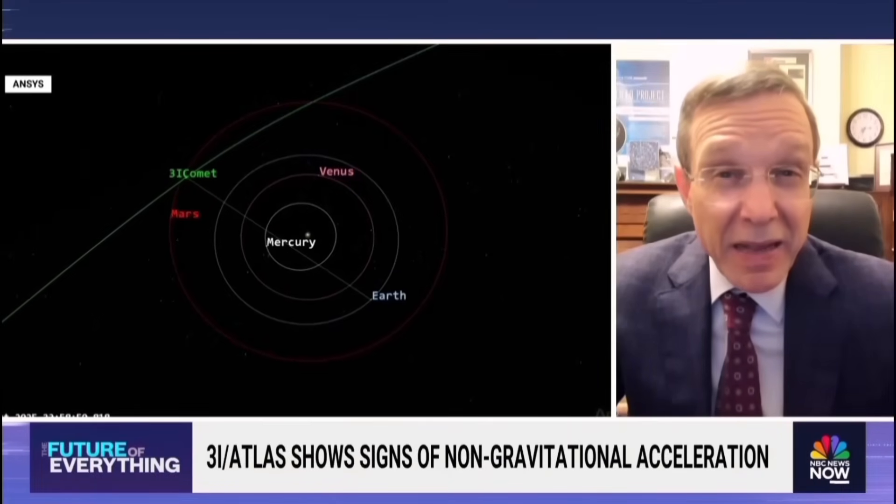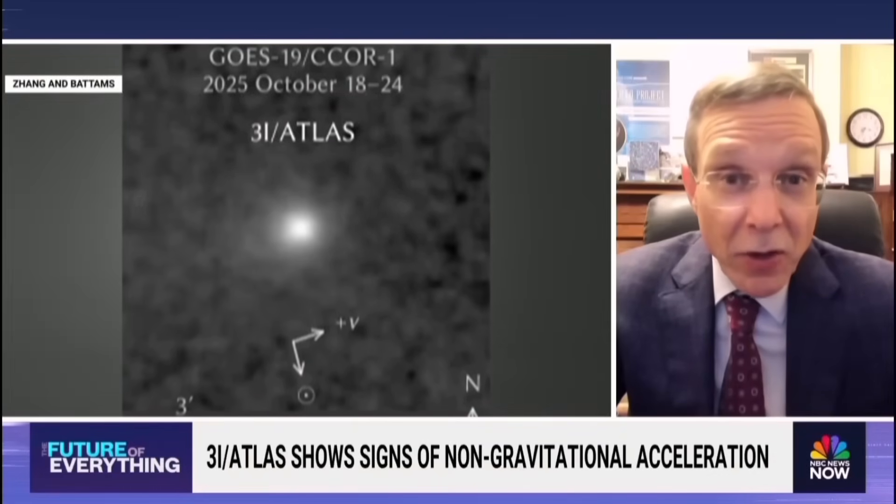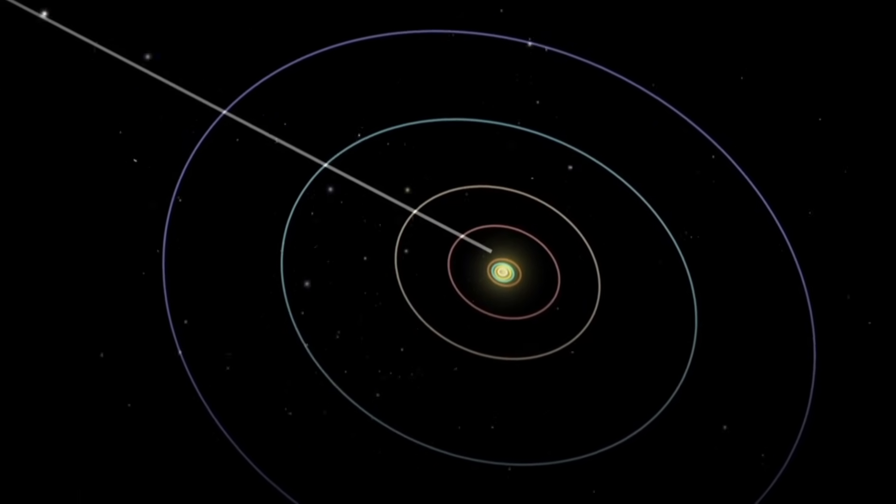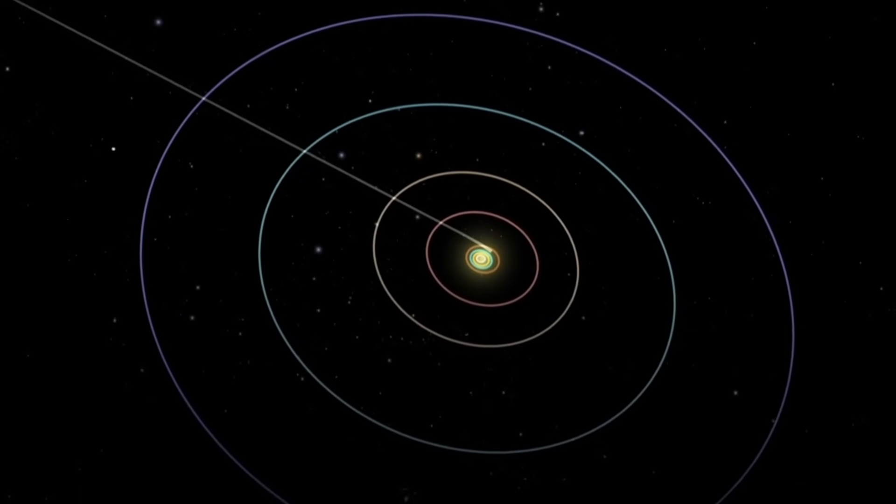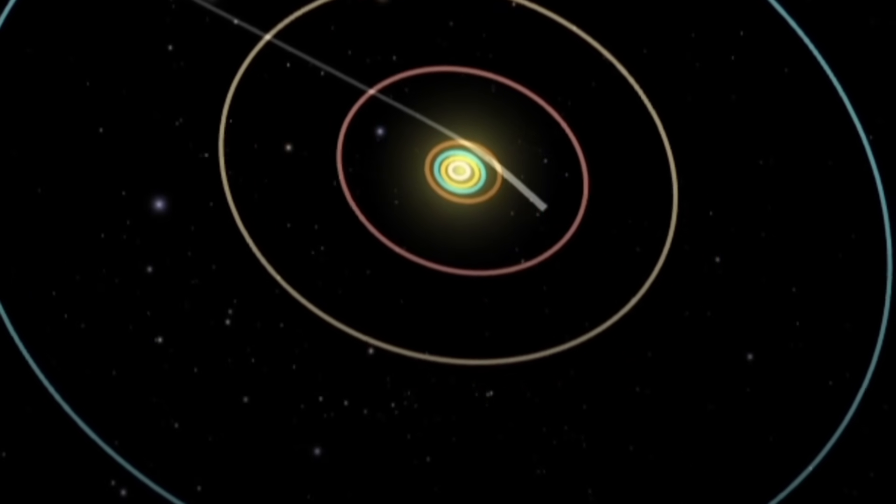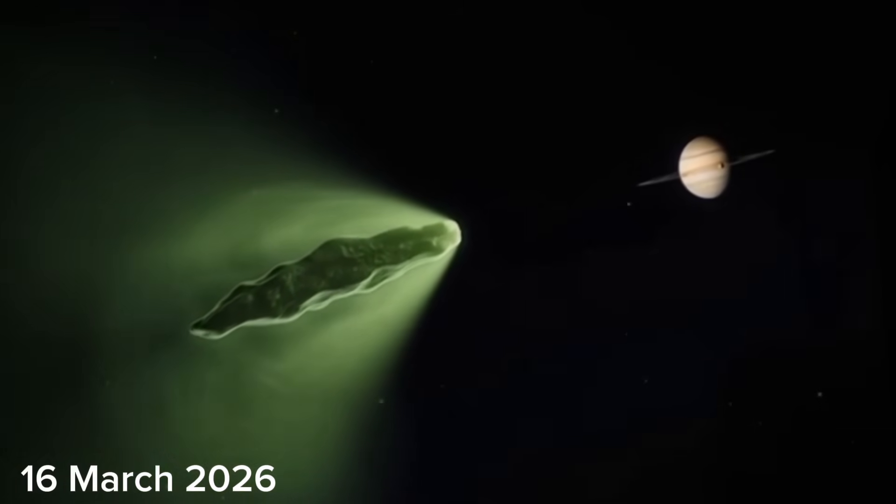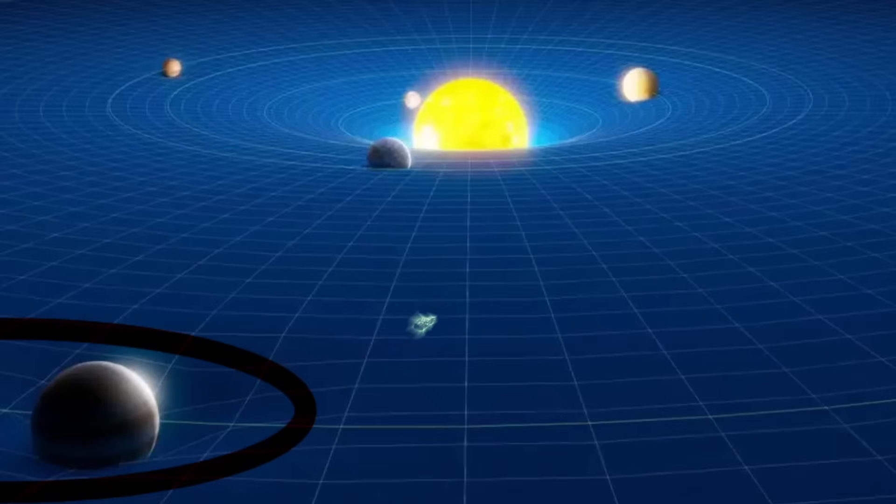According to Harvard University professor Avi Loeb, there is no clear explanation yet. And surprisingly, according to a new calculation, that little push has nudged 3i Atlas' path just enough so that on March 16, 2026, it will come incredibly close to a special boundary around Jupiter.